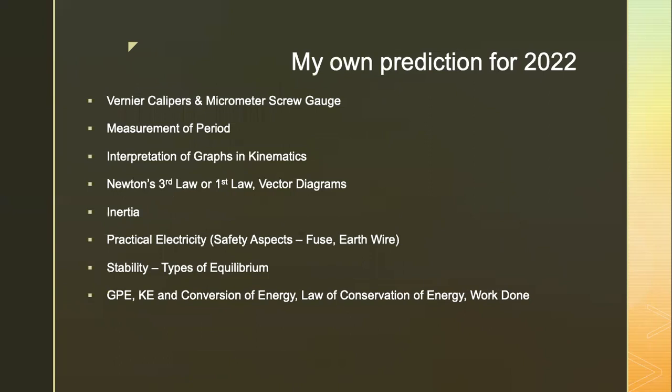Now, my own prediction for this year's paper was not exhaustive. I'm not giving the whole list, but I'm trying to list out those concepts that were not tested. So there is a chance they may be tested in this year's paper. Those that are missed out, I would predict they have a higher chance of appearing. For example, vernier calipers and micrometer screw gauge, measurement of period, interpretation of graph in kinematics, Newton's third law and first law and vector diagram, concept of inertia, practical electricity, not so much on safety aspect, like what are the electric hazards, overloading, short circuit, etc.